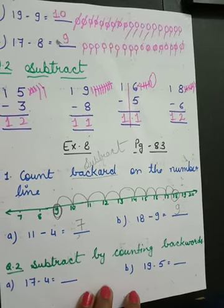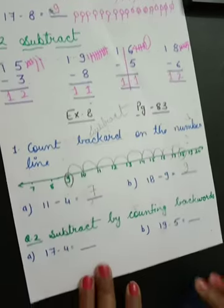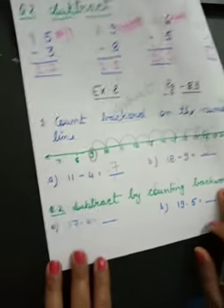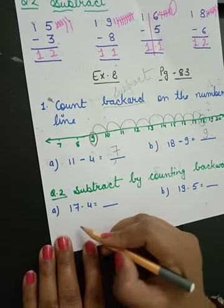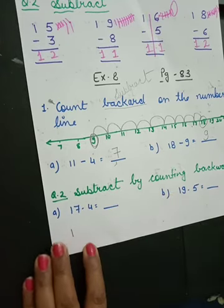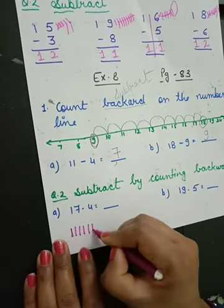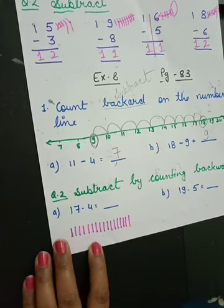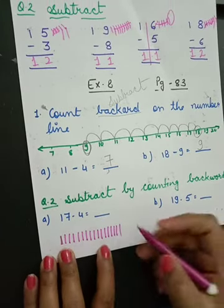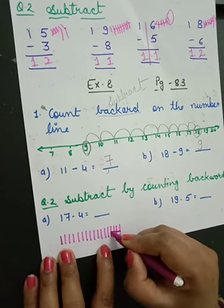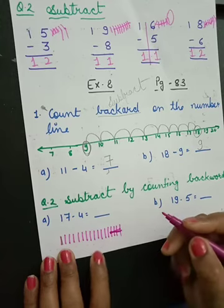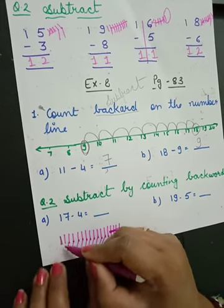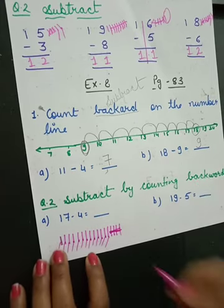Now question number two: subtract by crossing backwards. 17 minus 4 — draw 17 lines: 1, 2, 3, 4, 5, 6, 7, 8, 9, 10, 11, 12, 13, 14, 15, 16, 17. Go backward and cut 4: 1, 2, 3, 4. How many lines are remaining? 1, 2, 3, 4, 5, 6, 7, 8, 9, 10, 11, 12, 13. Answer: 13. Got it all of you?